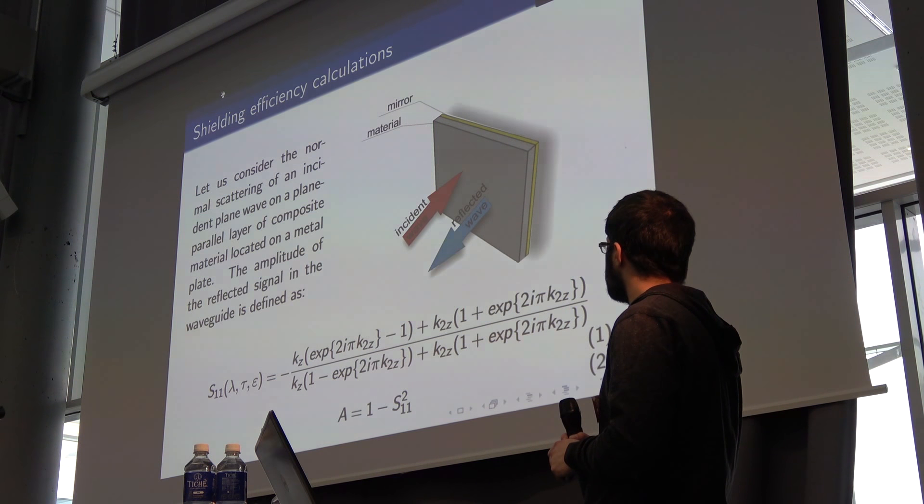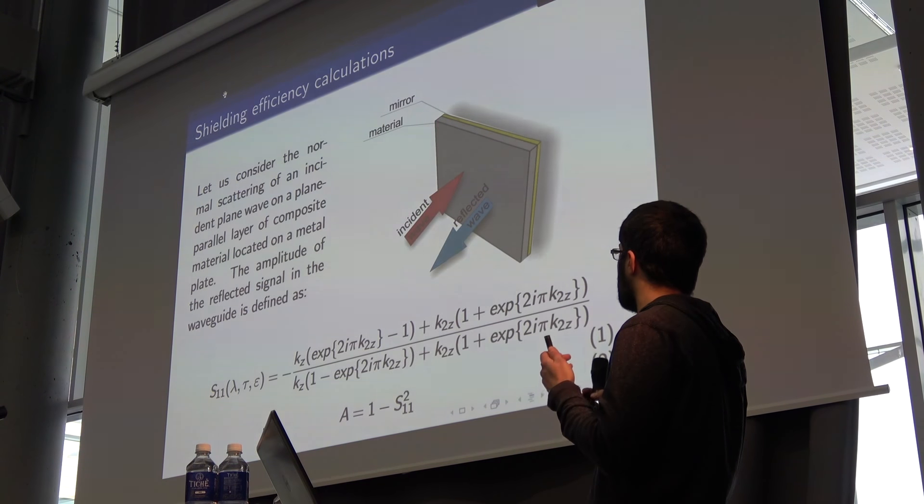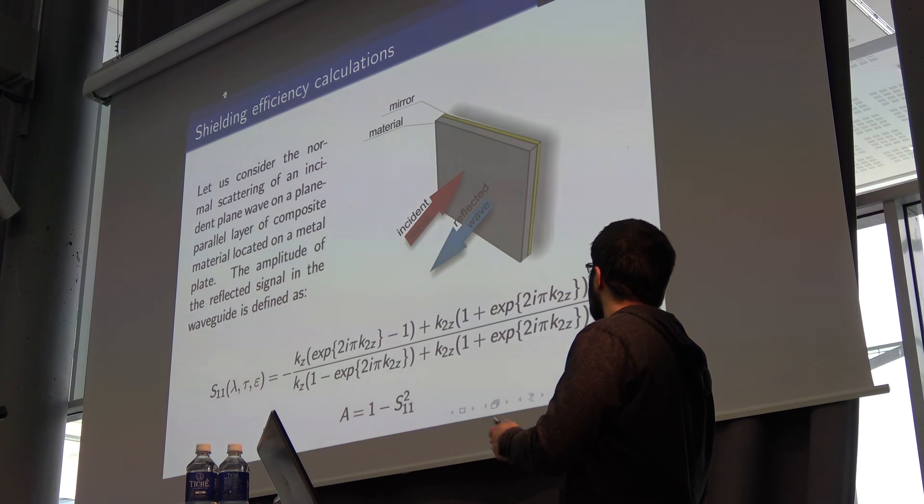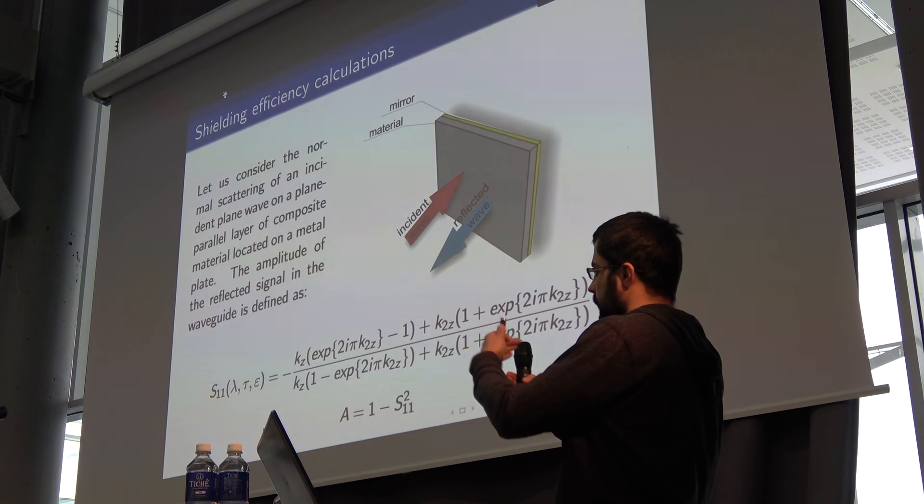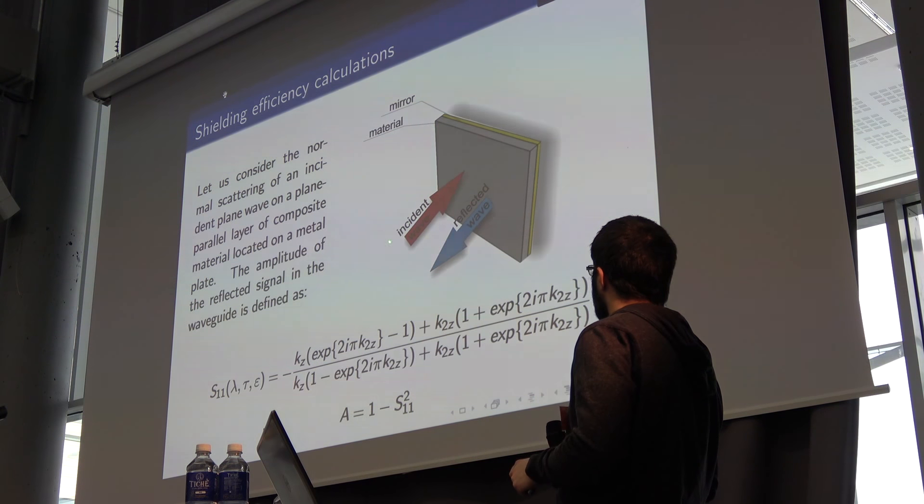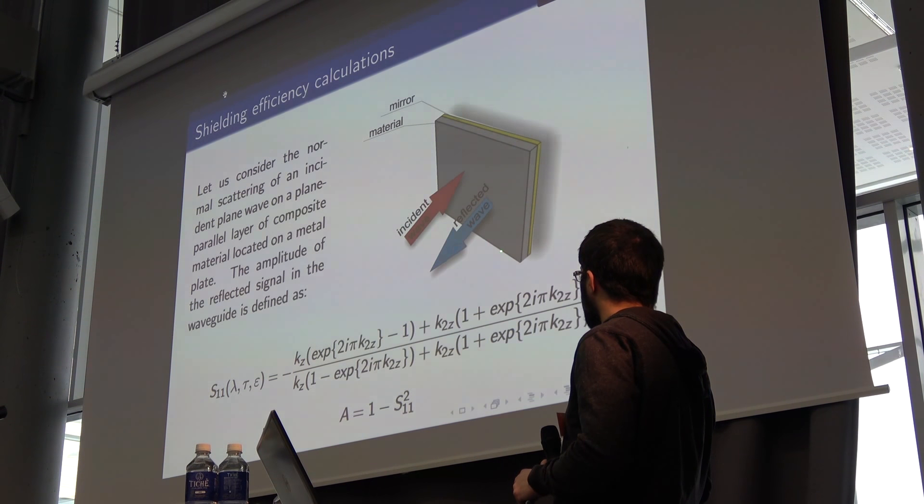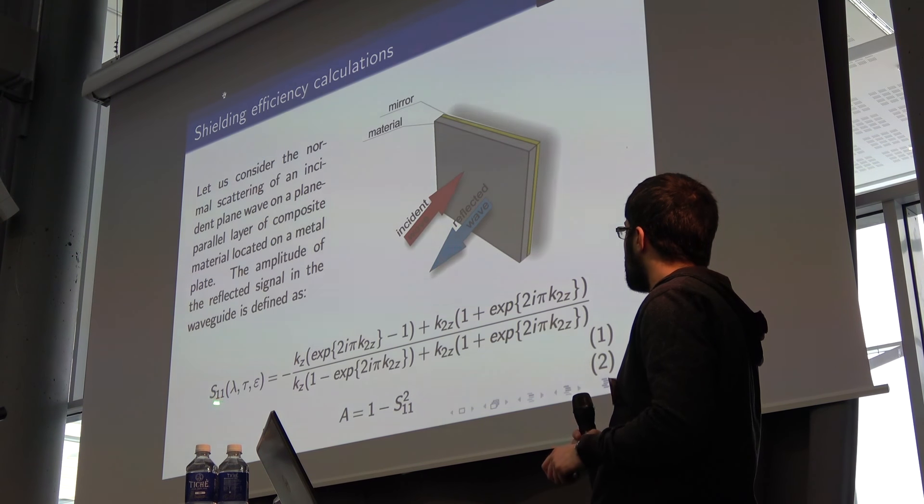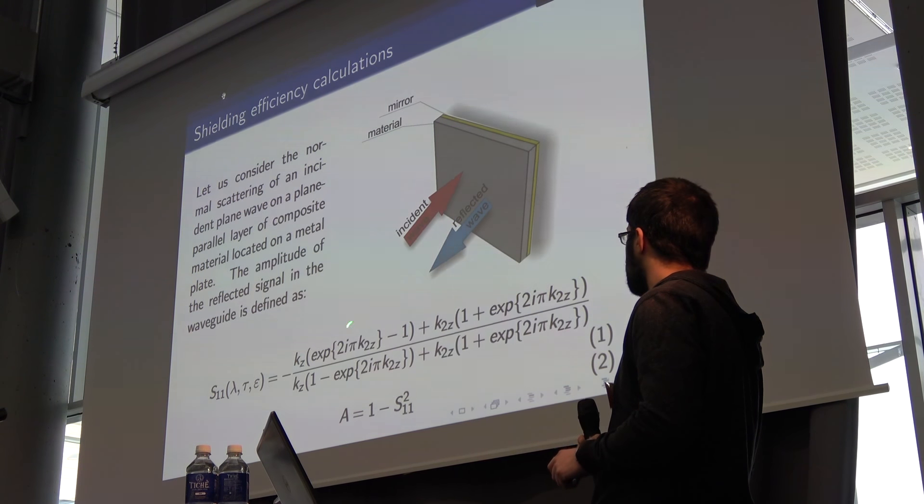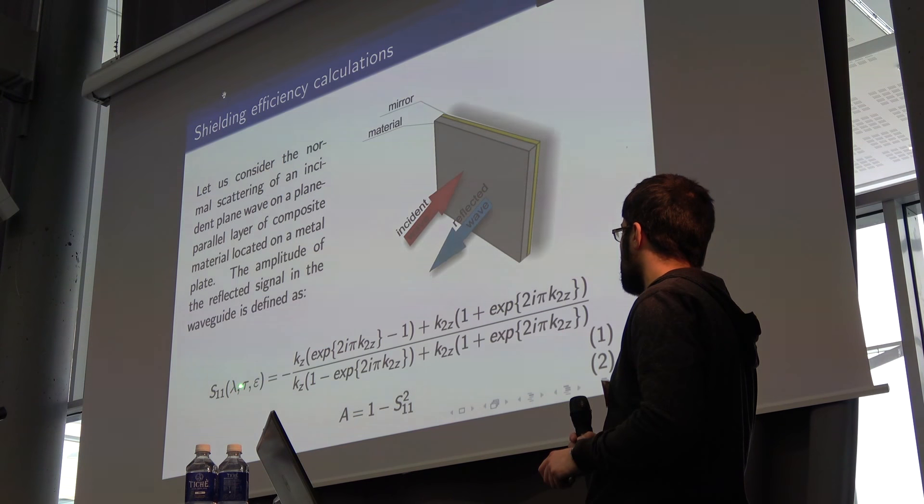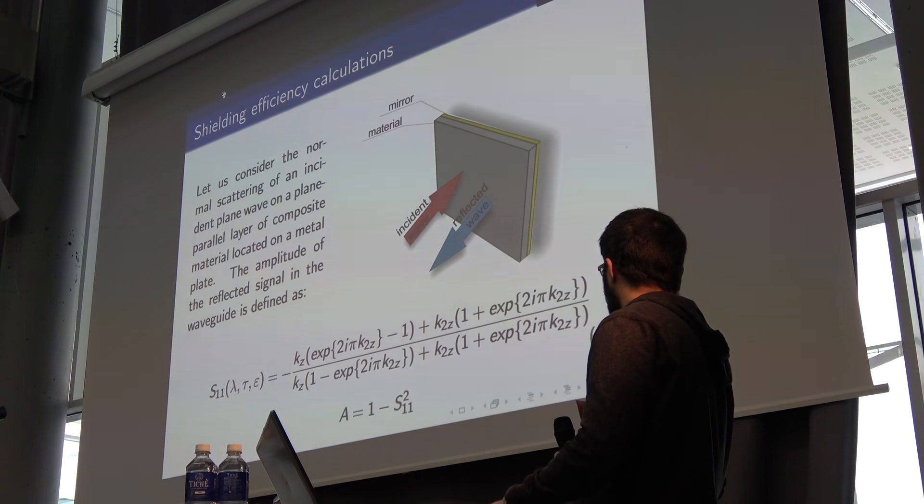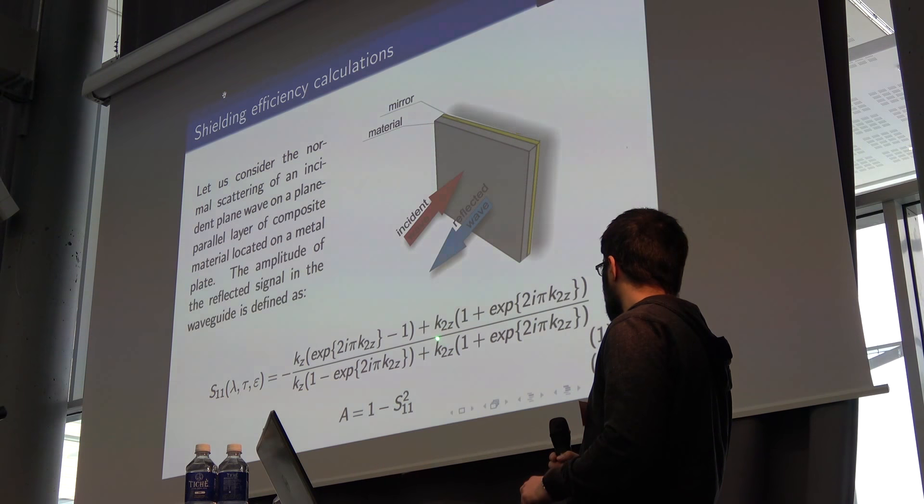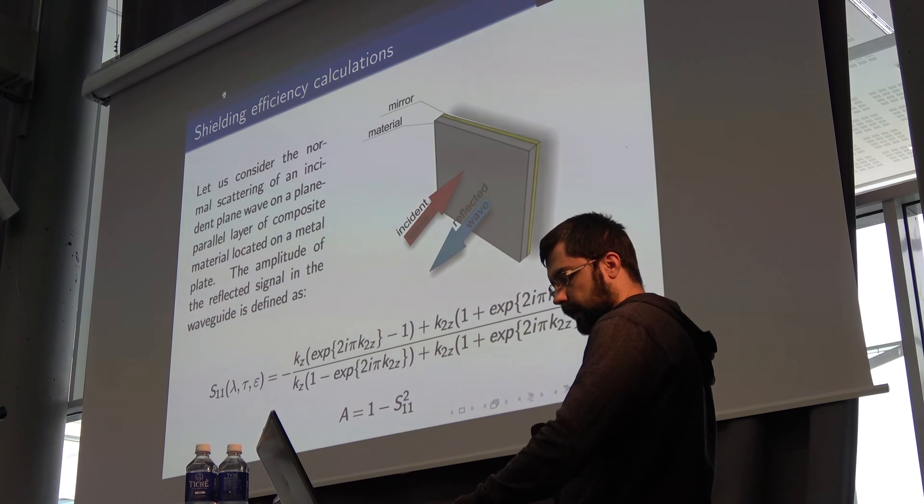We use a system not in a waveguide as a model, but as freestanding. We use a material and a mirror behind the material, with the incident wave and reflected wave here. S11 is the ratio between the reflected wave and the incident wave. In this case, this ratio can be evaluated as follows: it depends on thickness as well as the electric permittivity. Since we know S11, we can calculate the absorption as follows.